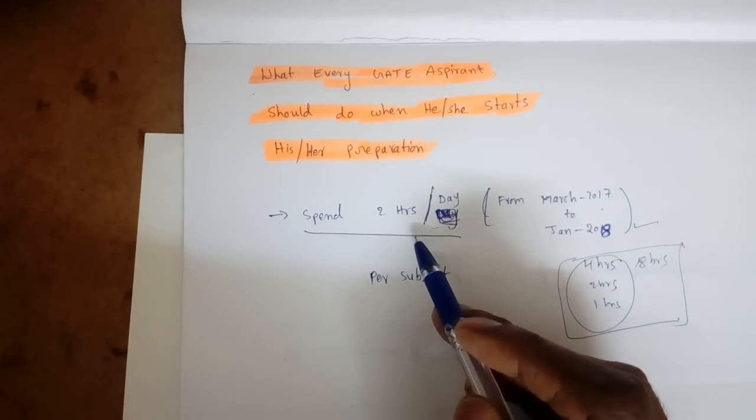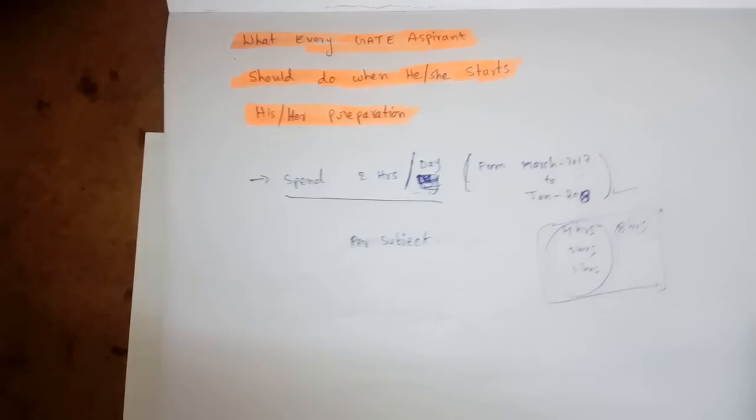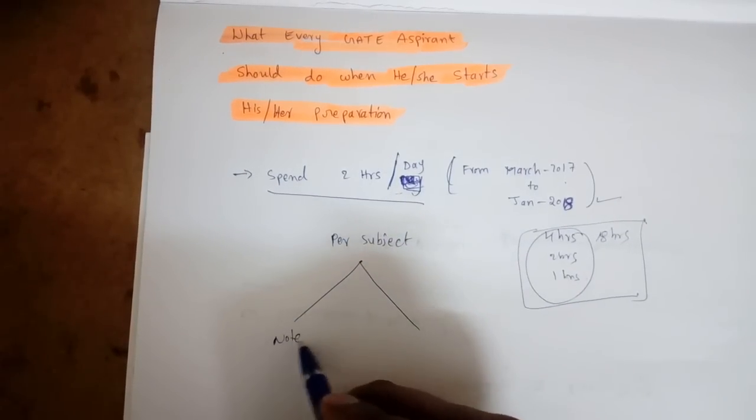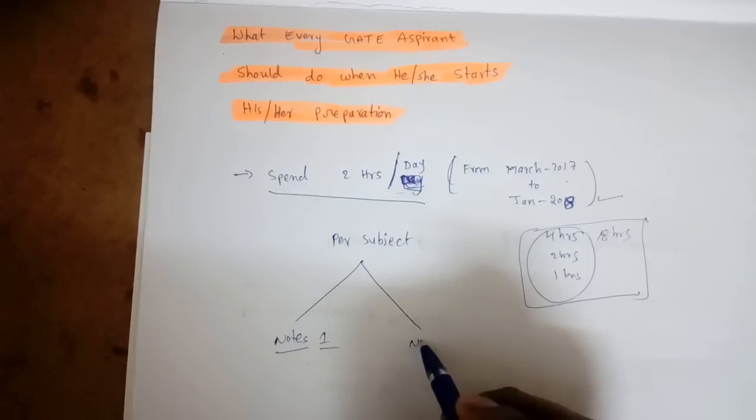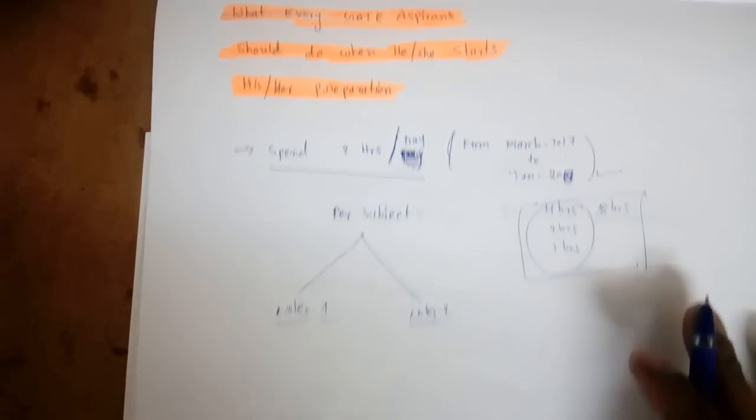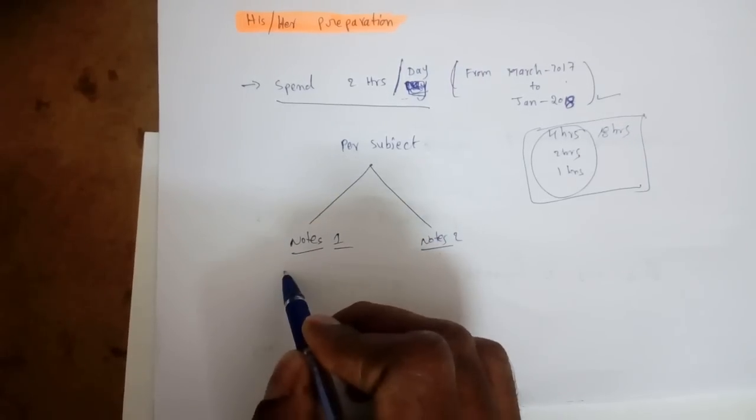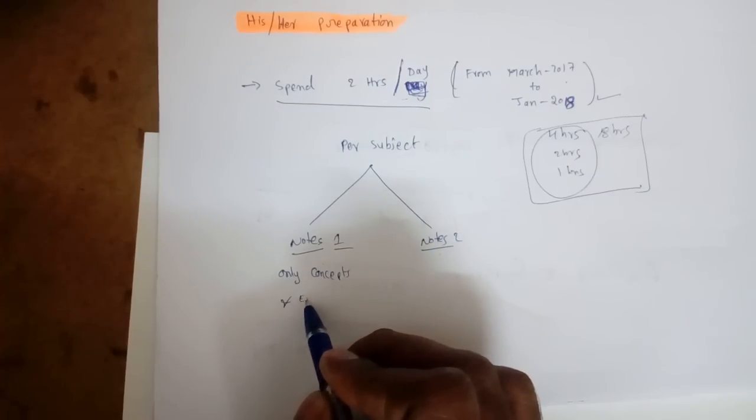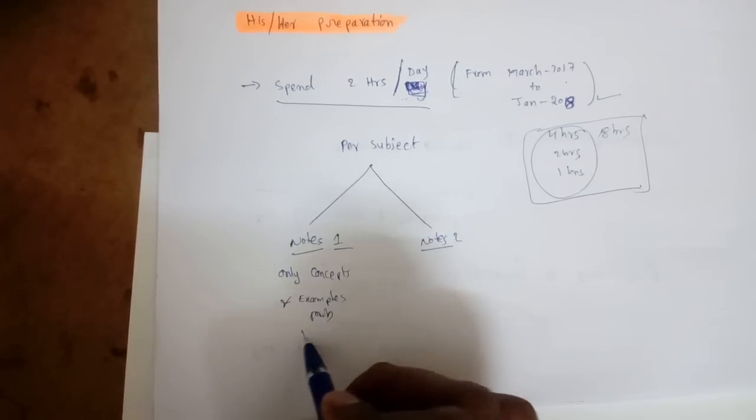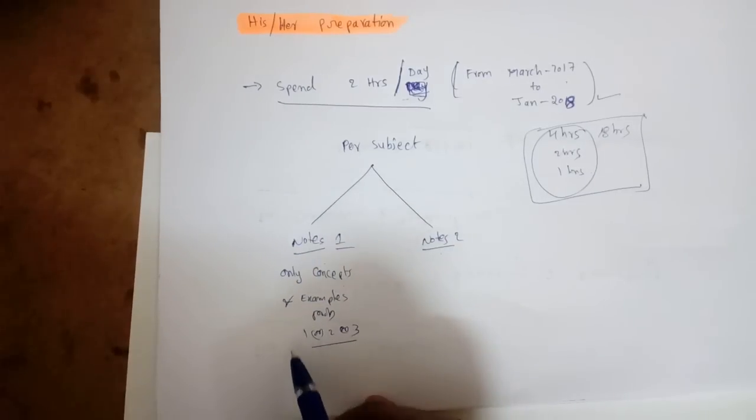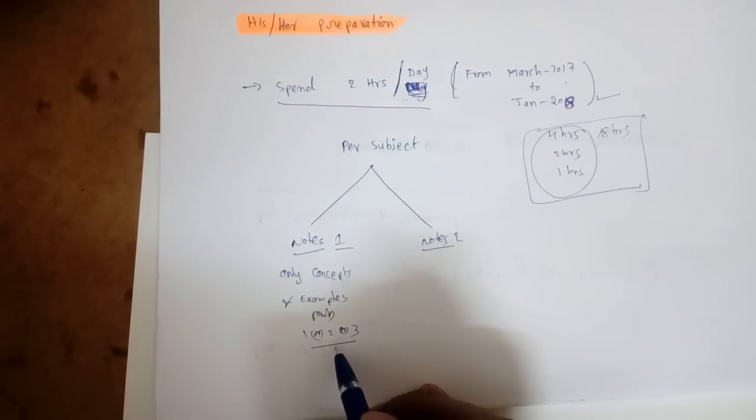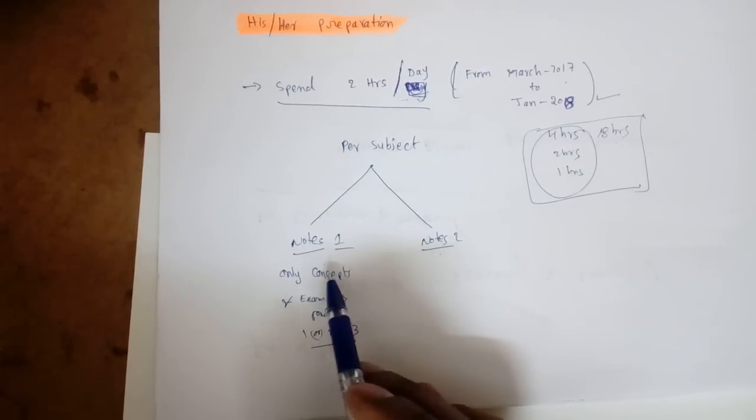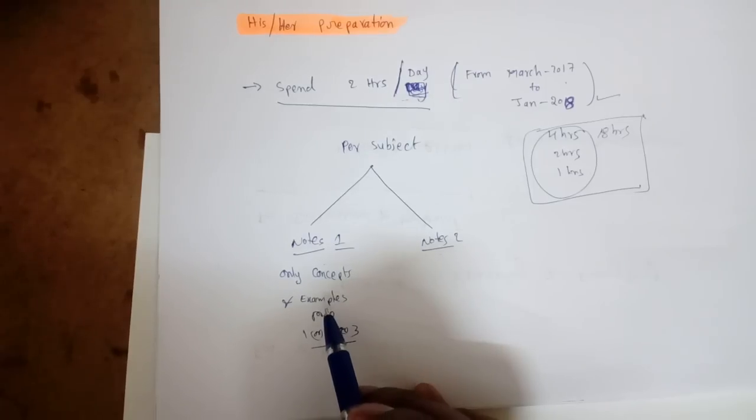When you start GATE preparation, per subject we have to maintain two notebooks. Notes one and notes two. In notes one, we will write preparation for only concepts and depending on that concept, some example problems, maybe one or two maximum three. It should not be like one concept with ten or twenty problems, so at the end you'll see 100, 200, 300 pages but concepts will be only 100 pages.